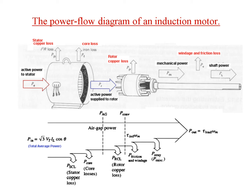Then there are two losses. One is called the stator copper loss, which is due to the windings inside the stator. The other loss is the core loss — this core material will also cause losses like eddy current loss, etc. After these two losses, the power available in the hollow inside will be called the air gap power.